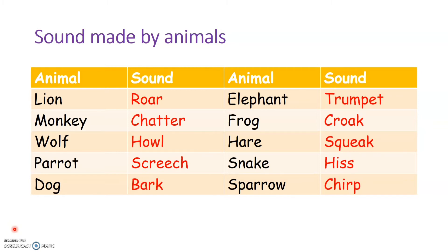Do trees and leaves also produce sound? Yes! Trees and leaves also produce sounds. For example, on a windy day we hear the rustling of tree leaves — when dry tree leaves move, we hear a rustling sound. Or when we walk on dry fallen leaves, we hear a sound, which is known as a crackling sound.